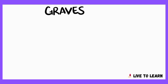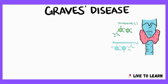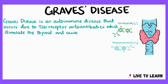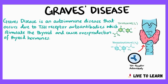Welcome back everyone. We'll be discussing another endocrinological disorder today, which is Graves' disease. Graves' disease is an autoimmune disease that occurs due to TSH, or thyroid stimulating hormone, receptor autoantibodies which stimulate the thyroid and cause overproduction of thyroid hormones. It involves diffuse goiter, ophthalmopathy, and dermopathy.